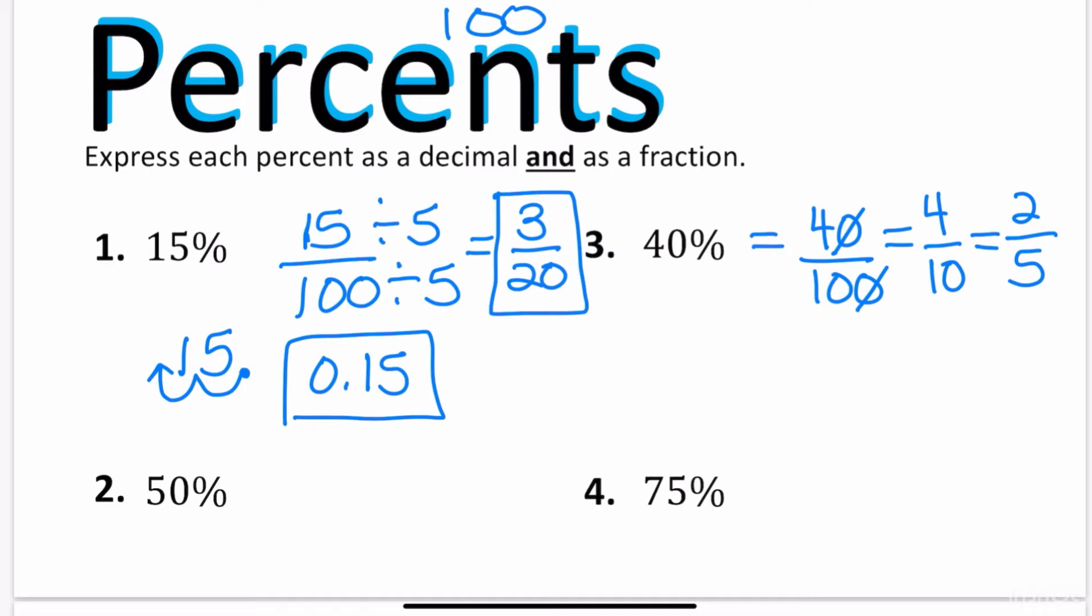As a decimal, 40 divided by 100, when you don't see a decimal point in a number, it always exists at the end of the number. And you're going to move the decimal point two times to the left. So as a decimal, this is the same as 0.40. You can even leave it as 0.4. You don't have to write 0.40.